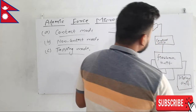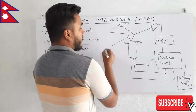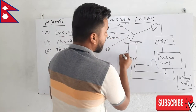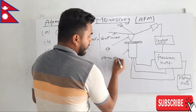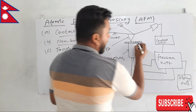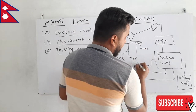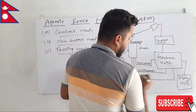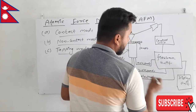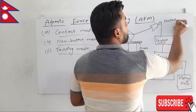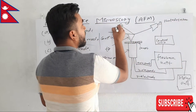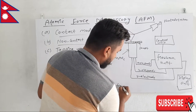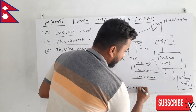Now, the names of the components: this is the tip, this is the cantilever, this is the piezoelectric cube, and here is the sample. These are the X electrode, Y electrode, and Z electrode. Here is the photo detector and here is the laser light. This is the complete figure of the atomic force microscopy setup.